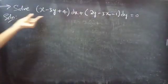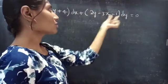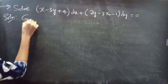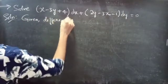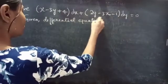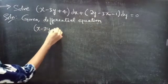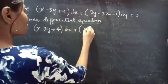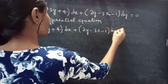Problem: solve (x minus 3y plus 4) dx plus (2y minus 3x minus 1) dy equals 0. Given differential equation: (x minus 3y plus 4) dx plus (2y minus 3x minus 1) dy equals 0.